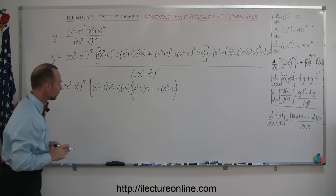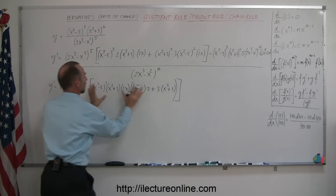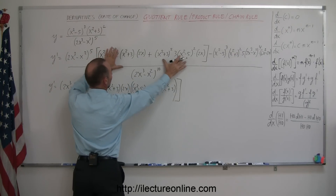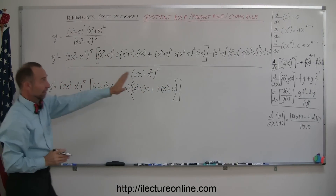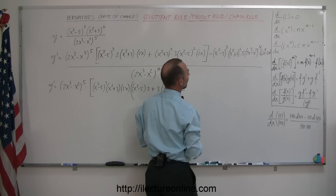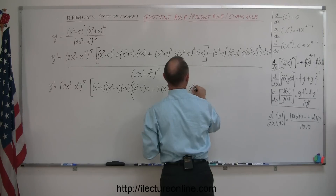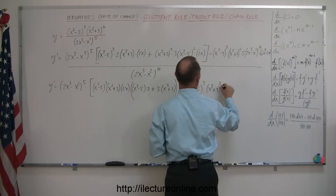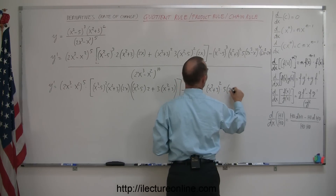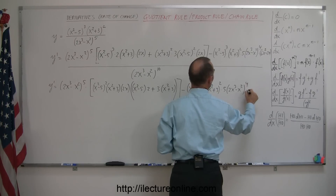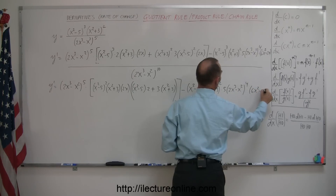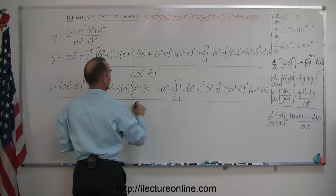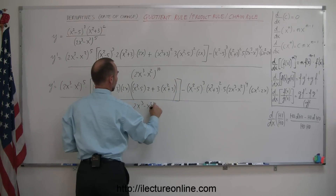So this is the quantity within the brackets — we factored out what is common in these two terms. There's a term here plus a term there, and what was common we factored out. We still have to copy down what we have over here, so minus: x squared minus 5 cubed times x squared plus 3 squared times 5 times 2x cubed minus x squared to the fourth power times 6x squared minus 2x, and the whole thing divided by 2x cubed minus x squared to the tenth power.